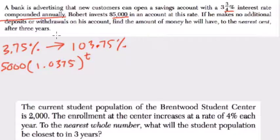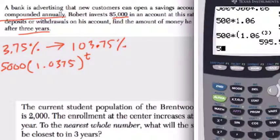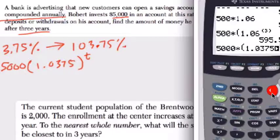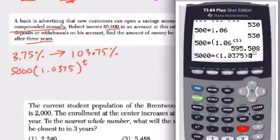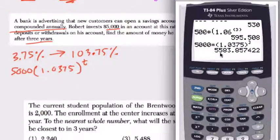Here, they want to know to the nearest cent what will happen after 3 years. So we do 5,000 times 1.0375 to the 3rd power, which gives us 5,583.86.